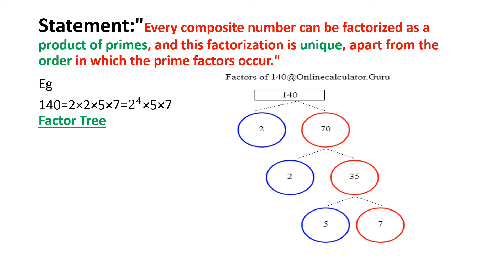Let us understand the definition or the statement of the Fundamental Theorem of Arithmetic. We have already learned about prime and composite numbers in our previous classes. Except one, all numbers are either prime or composite. Composite numbers are those which can be written as a product of their factors. So if we have a positive integer which is composite, we can factorize it as a product of primes.